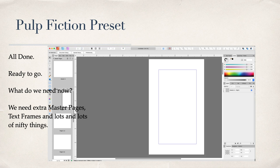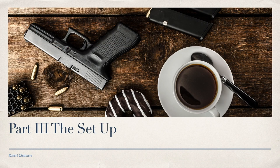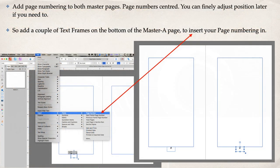All done and ready to go. You need extra master pages, text frames, and lots of other things. There's your document: Master A page and 12 pages, starting on the right. Part three - the setup. Add page numbering to both master pages - both a left and a right side. The page numbers are centered and you can adjust their position later. Add a couple of text frames on the bottom of the Master A page to insert your page numbering into, just below the margin line.